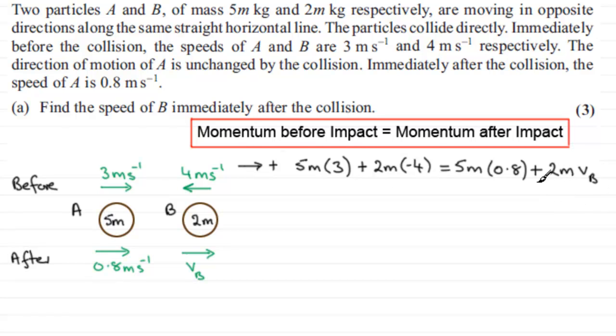Okay, so let's just see where this takes us. Now we've got an m in every term, so we could cancel out the m throughout. If we simplify this, we've therefore got 15, and here we've got minus 8, equals, and 5 times 0.8 is 4, and then we've got plus 2vB.